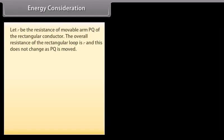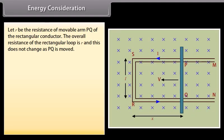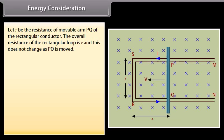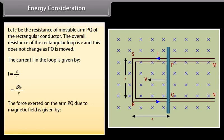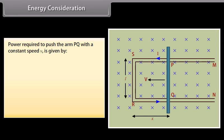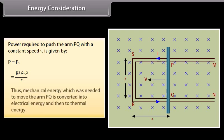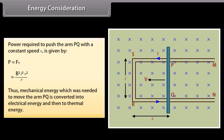Energy Consideration. Let R be the resistance of the movable arm PQ of the rectangular conductor. The overall resistance of the rectangular loop is R and does not change as PQ is moved. The current I in the loop is given by E/R = BLV/R. The force exerted on arm PQ due to the magnetic field is ILB = B²L²V/R. The power required to push the arm PQ with constant speed V is B²L²V²/R. Thus, mechanical energy needed to move arm PQ is converted into electrical energy and then to thermal energy.